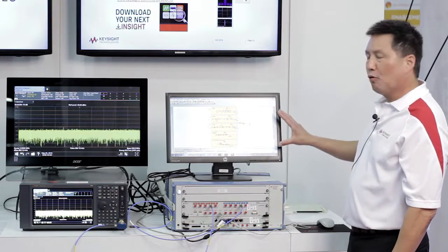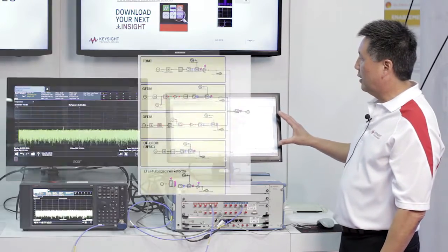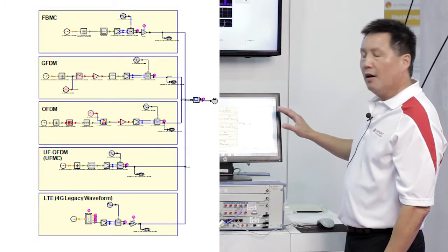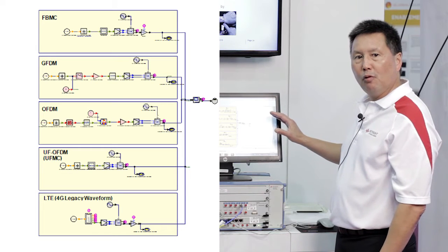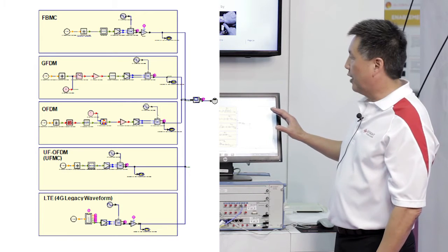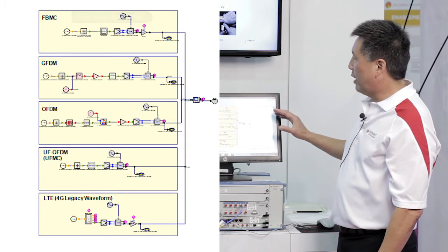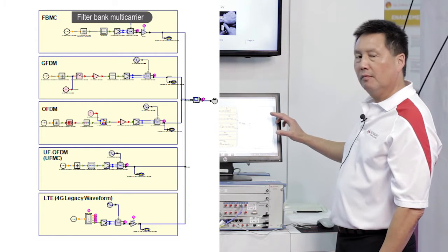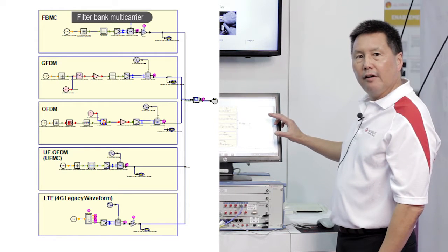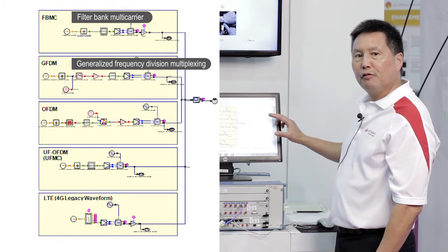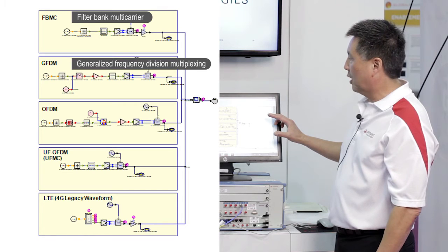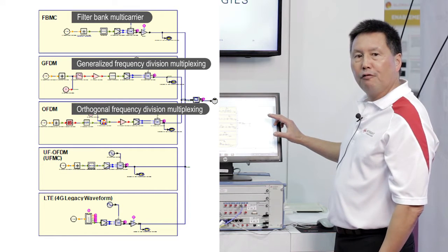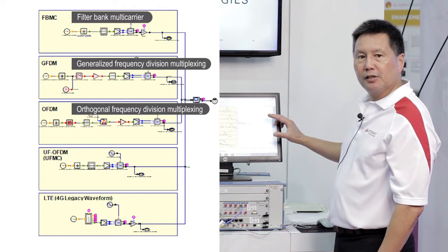We have the workspace shown here, and in this schematic we have various candidate 5G waveforms that are being simulated. We have FBMC — filter bank multi-carrier — we have GFDM — generalized frequency division multiplexing — and we have OFDM, which we're all familiar with because of LTE.